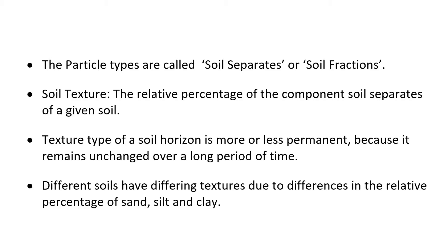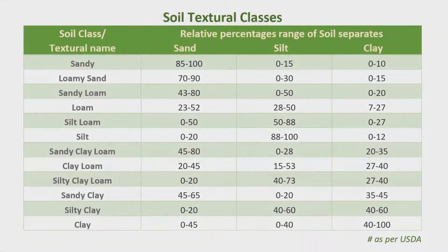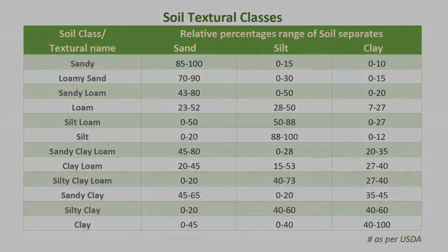Some soils are fine while others are coarse because the relative percentage of sand, silt, and clay differ from soil to soil. The relative percentage of soil separates of a given soil is referred to as the soil texture. The texture of the soil for a given horizon is almost a permanent character because it remains unchanged over a long period of time.